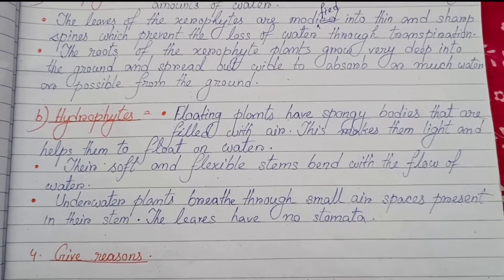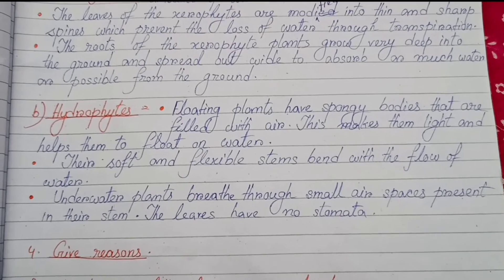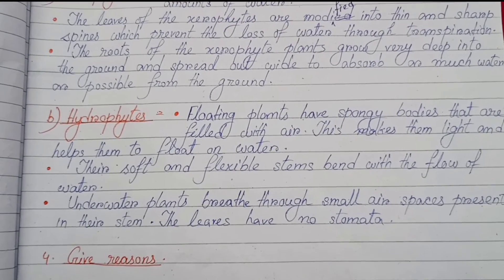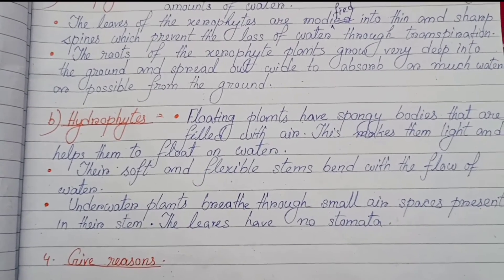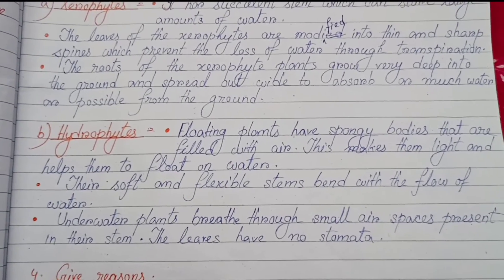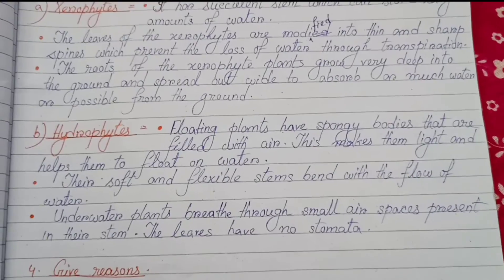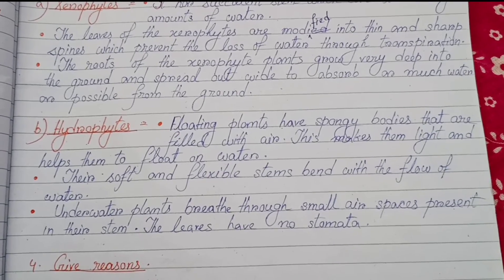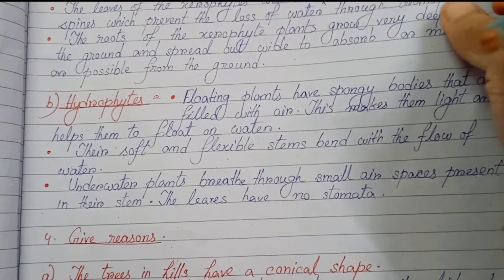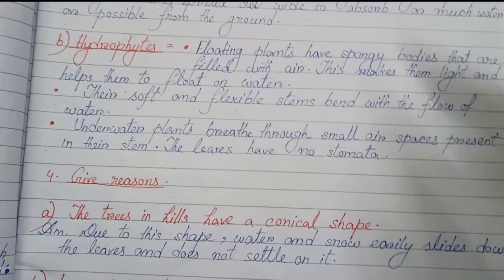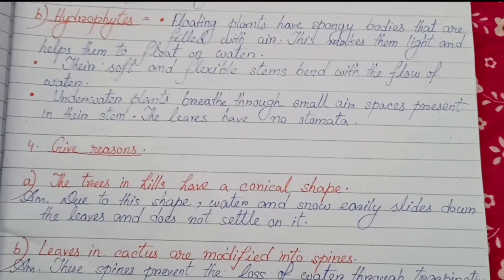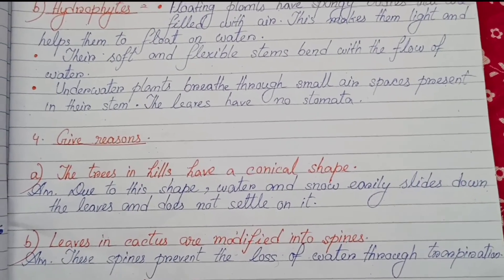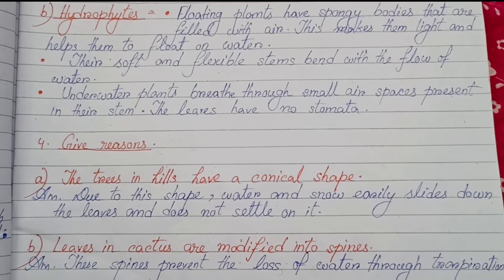Adaptations of hydrophytes: floating plants have spongy bodies filled with air, which makes them light and helps them float on water. Their soft and flexible stems bend with the flow of water. Underwater plants breathe through small air spaces present in their stems, and their leaves have no stomata.